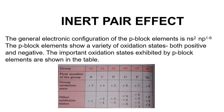Hello students, today we discuss the inert pair effect. Elements of group 13 to 18 of the periodic table are collectively called p-block elements. The general electronic configuration of the p-block elements is ns², np¹ to np⁶. The p-block elements show a variety of oxidation states, both positive and negative.